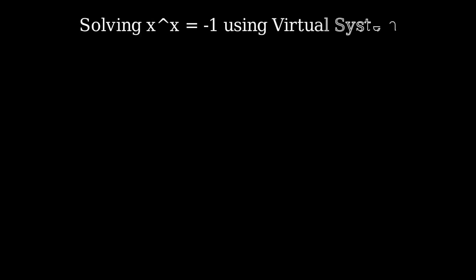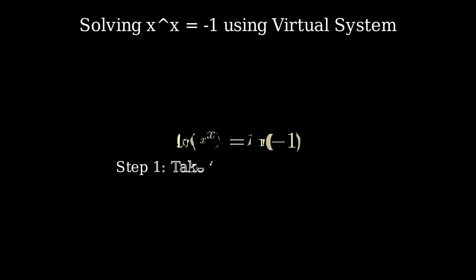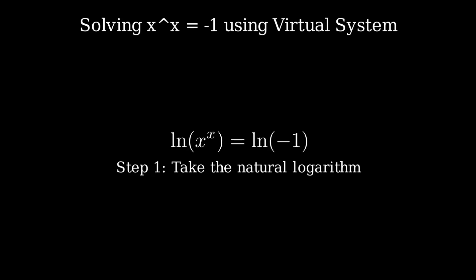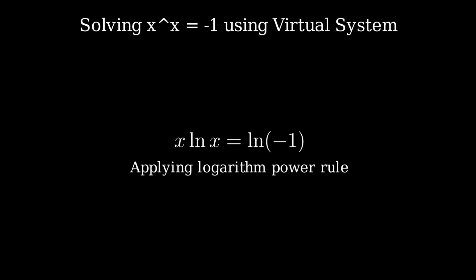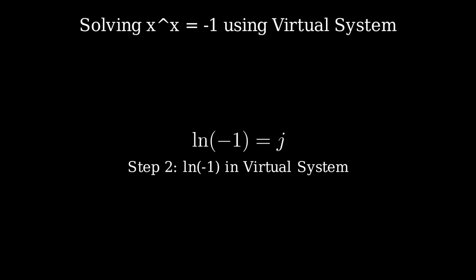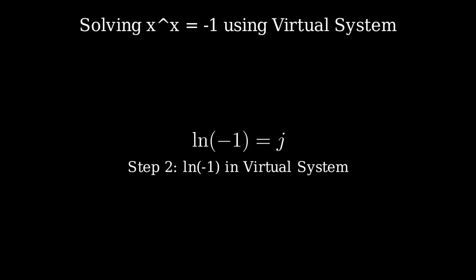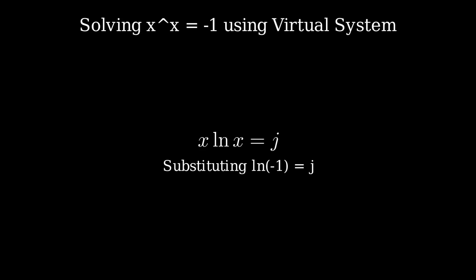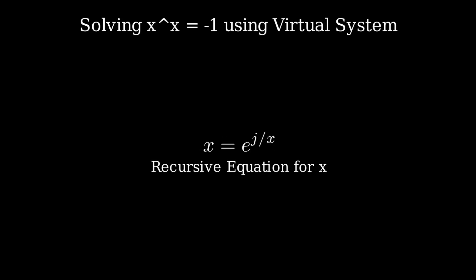Now let's try solving the same equation — x to the power of x equals negative 1 — but this time using the virtual number system. Again, we start by taking the natural logarithm of both sides, which gives us x times the natural logarithm of x equals the natural logarithm of negative 1. But here's the key difference: in the virtual number system, the natural logarithm of negative 1 is not an infinite set of values. Instead, it has a single well-defined value, which we call j. So now our equation simplifies to x times the natural logarithm of x equals j. To solve for x, we rewrite the equation in terms of exponentials, giving us x equals e raised to the power of j divided by x.